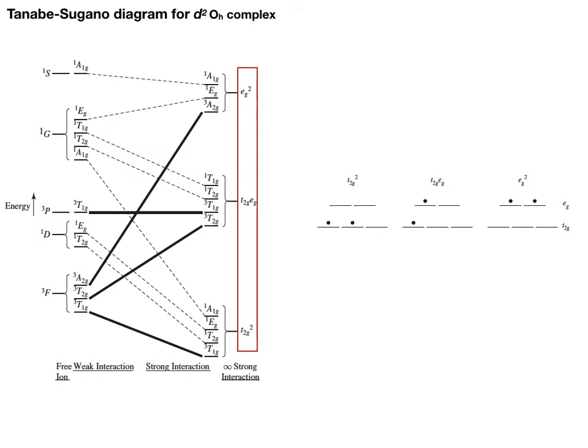If two electrons are populated onto T2G orbitals, regardless of whether they have the same or different spin, they will have the same energy, because electron-electron interaction is not considered. T2G² is therefore the ground state. The first excited state is T2GEG, and the second is EG². Whether the two electrons are parallel or anti-parallel in spin or in the same or different orbitals doesn't matter — only ligand-metal interaction, which splits D orbitals into EG* and T2G, is considered.